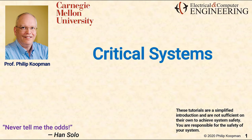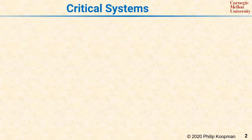This is Phil Koopman with a tutorial on safety and mission critical systems. Critical systems are those that must be highly dependable because the losses incurred by potential failures are unacceptable.